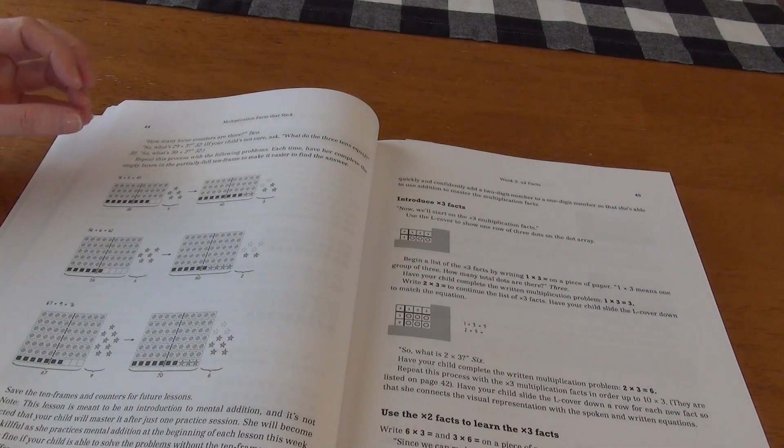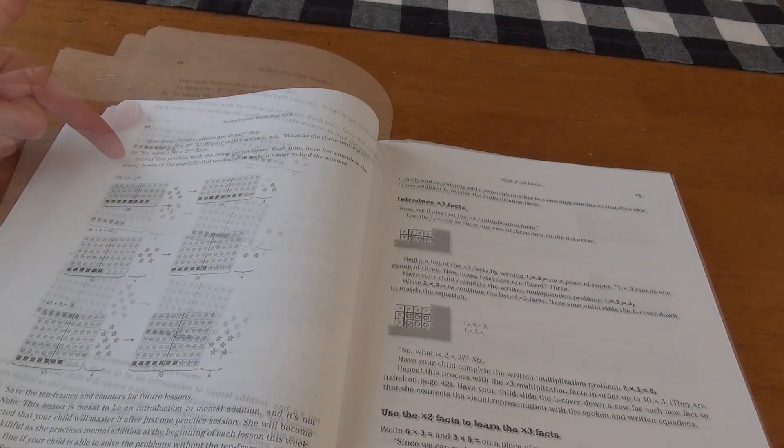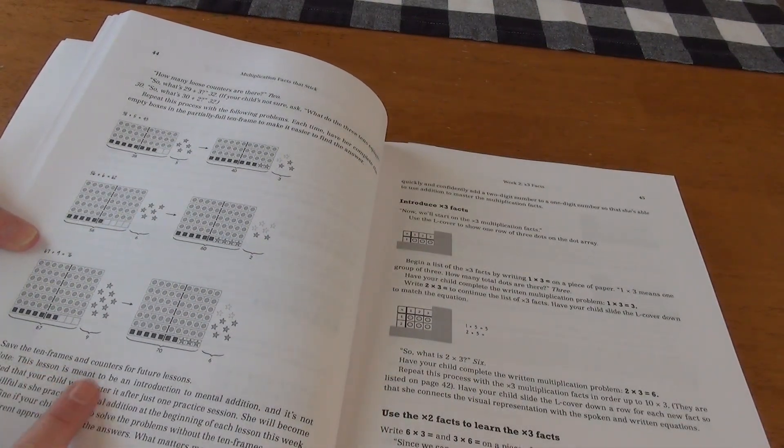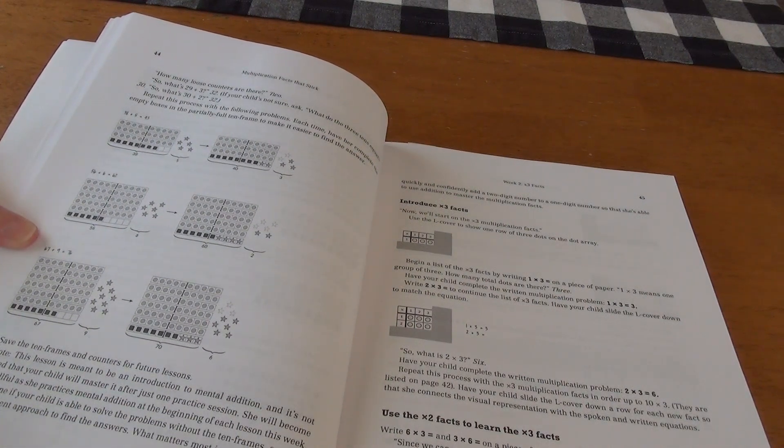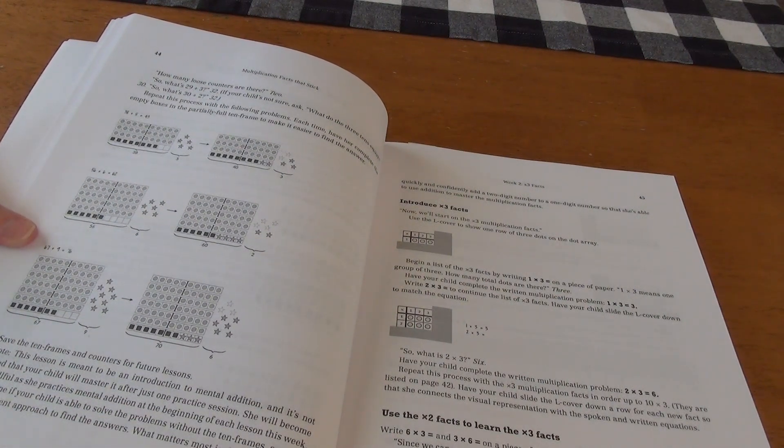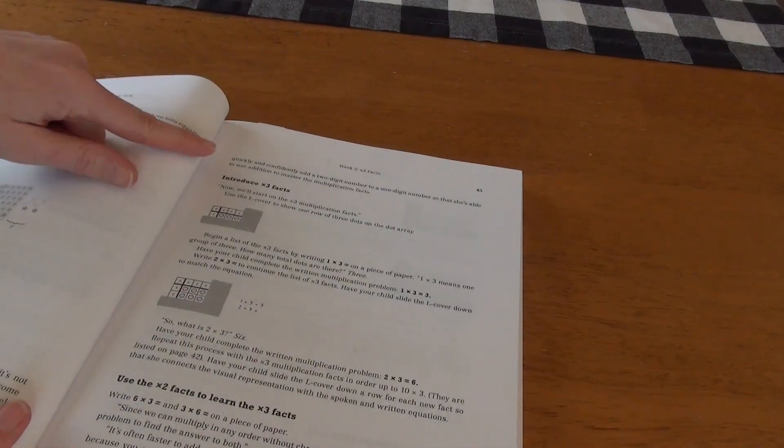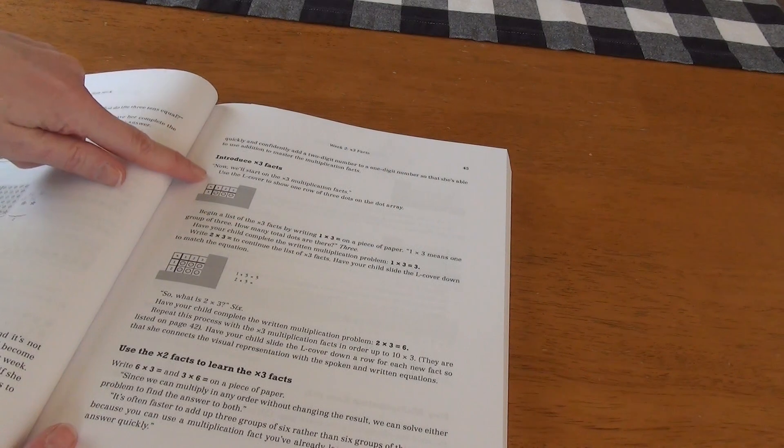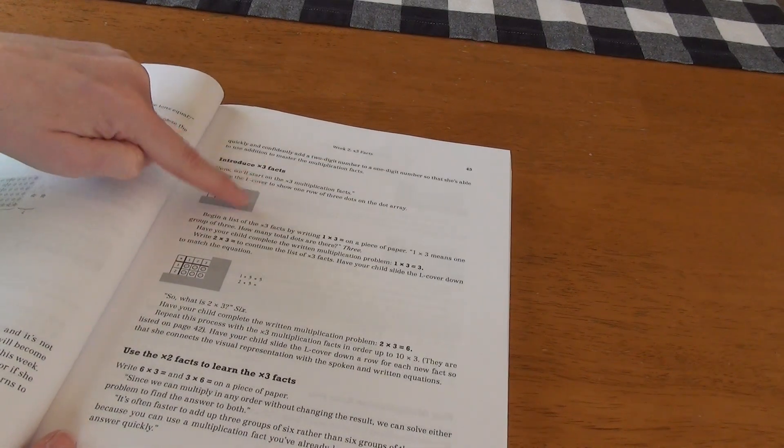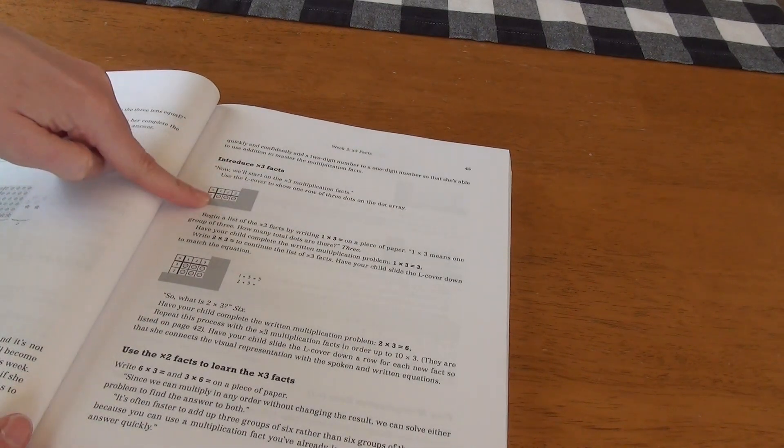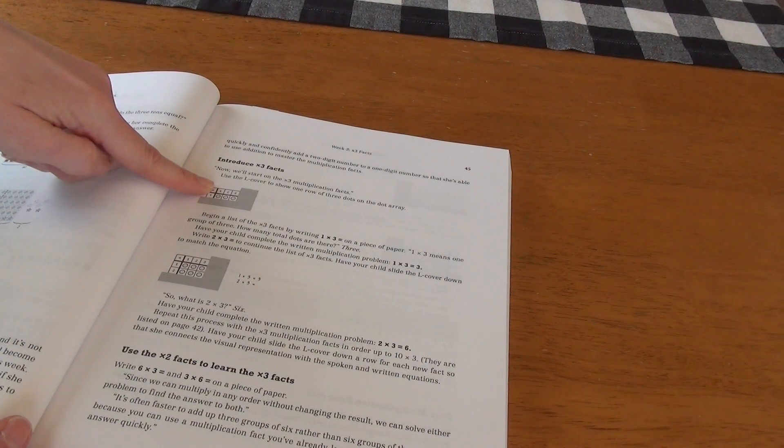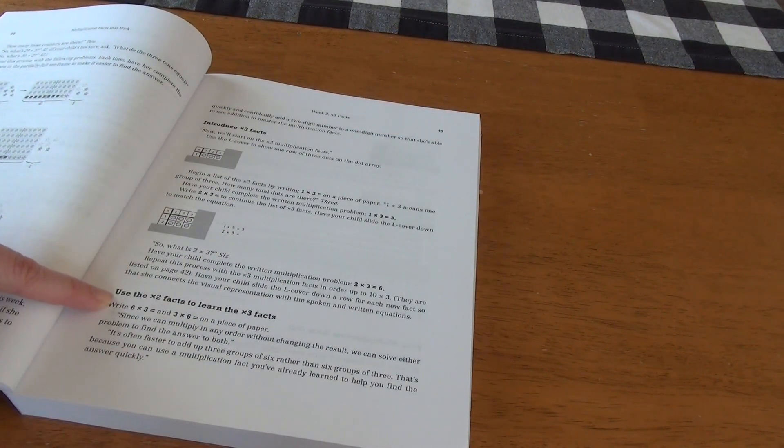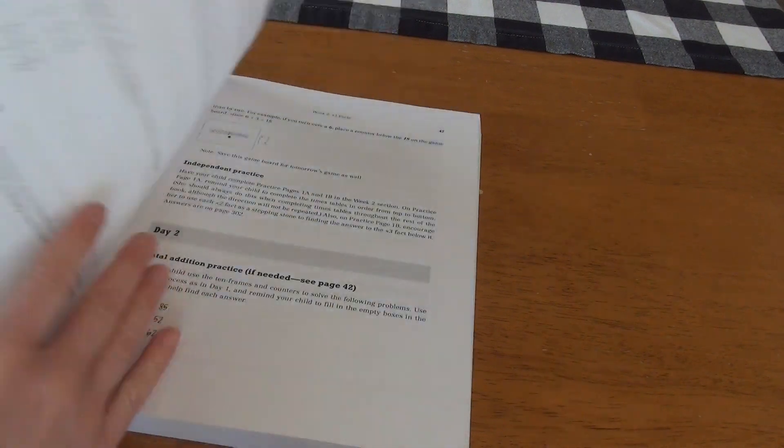It continues to go through this process where it is scripted. You have quotes if you're supposed to read that and then anything in italic is what your child would say. And then the just regular print at the bottom would be notes to you or an action that you should be doing. Then you come over here and you introduce the times three facts where we are going to use the L cover again, included in the book with your dot array included in the book.